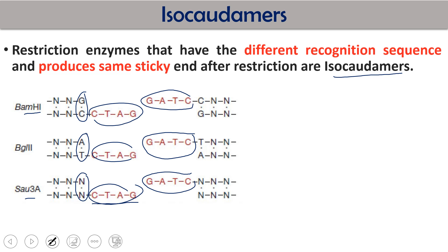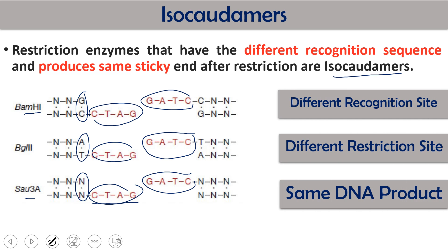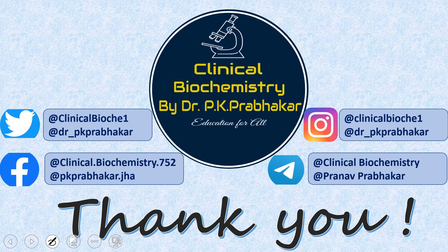They recognize differently, restrict differently, but the product — the cohesive end — is the same, so they are called isocaudomers. To summarize: isoschizomers have the same recognition site, same restriction site, and same product. Neoschizomers have the same recognition site, different restriction sites, and different product. Isocaudomers have different recognition sites, different restriction sites, but the same cohesive end product. These are the three different terms we need to understand.